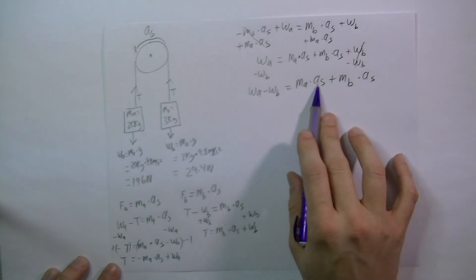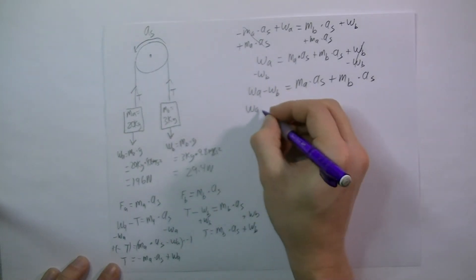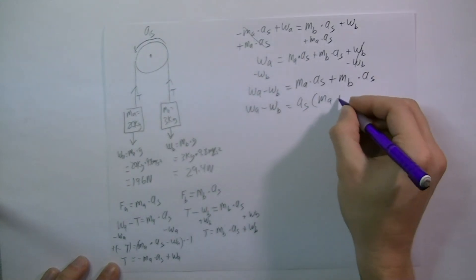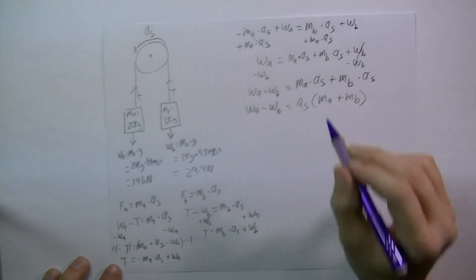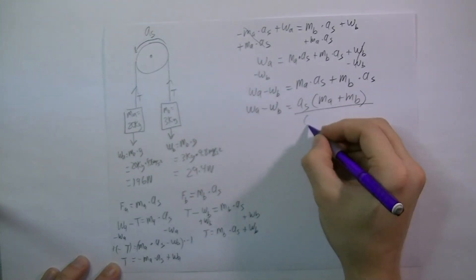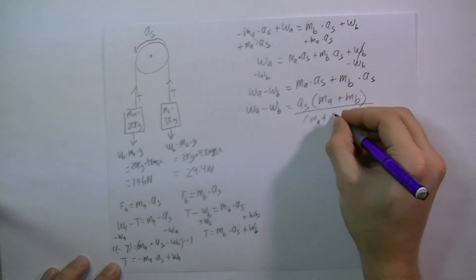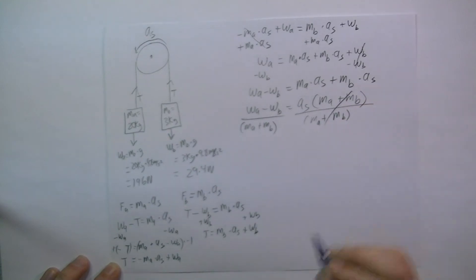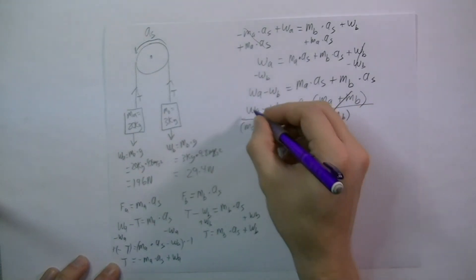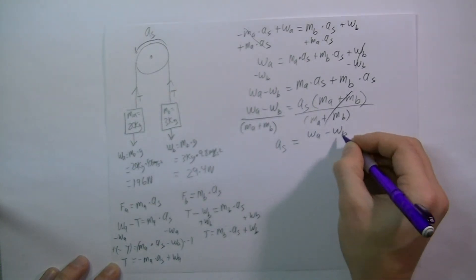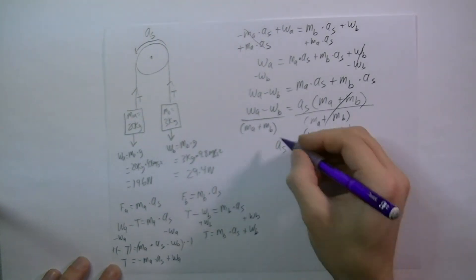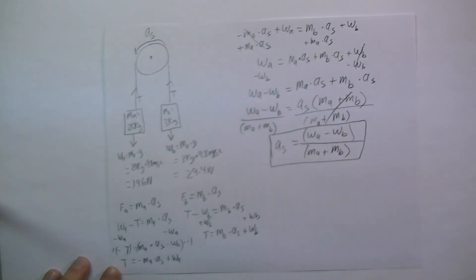I have a summation here and both terms have a common factor, so I can factor it out. The left side becomes the weight of A minus the weight of B, and factoring out the acceleration of the system gives A_S times the quantity (mass of A plus mass of B). To solve for the acceleration of the system, I divide both sides by (mass of A plus mass of B). This gives us a general equation for the Atwood machine: A_S equals (W_A minus W_B) divided by (M_A plus M_B).